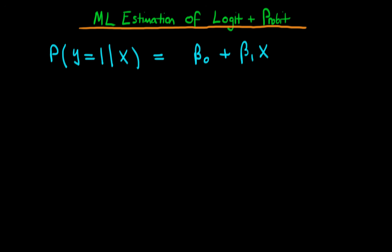We spoke about the problems with this particular type of model in that the linear combination of the independent variables is constrained to lie between minus infinity and plus infinity. That isn't very good because probabilities are typically constrained to lie between 0 and 1, rather than minus infinity and plus infinity.